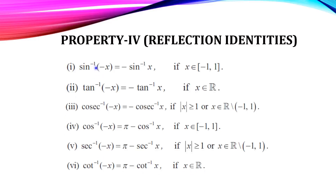To summarize: sin inverse, tan inverse, and cosecant inverse use the negative sign directly (odd/reflection). Cos inverse, secant inverse, and cot inverse use (π minus) the expression. These are the reflection identities.